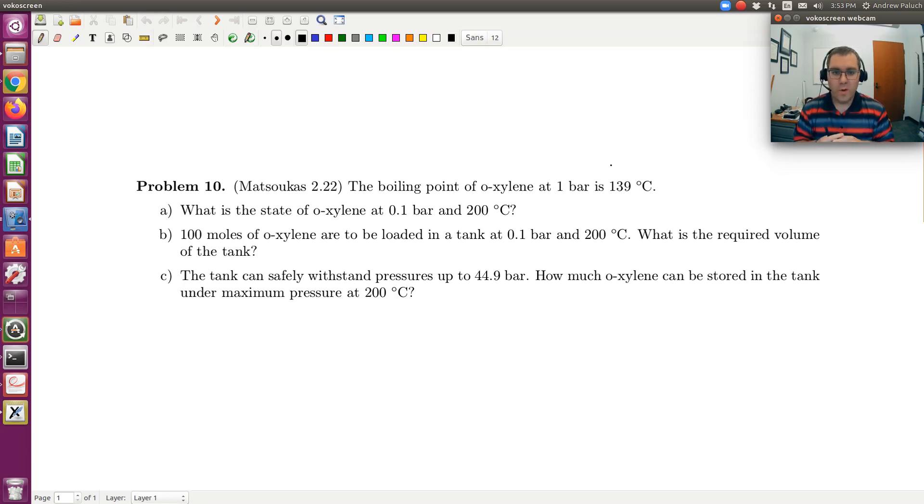We're told the boiling point of O-xylene at 1 bar is 139 degrees C. What is the state of O-xylene at 0.1 bars and 200 degrees C? Well, let's think back to identifying phases. So boiling point of O-xylene at 1 bar is 139 degrees C. Alright, so at 1 bar, there's T-sat.